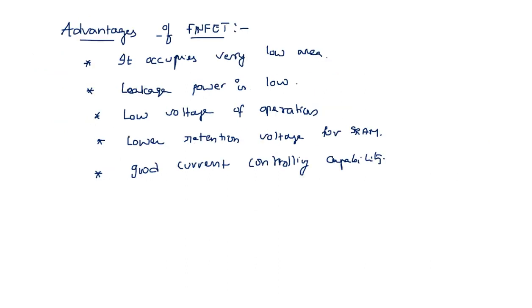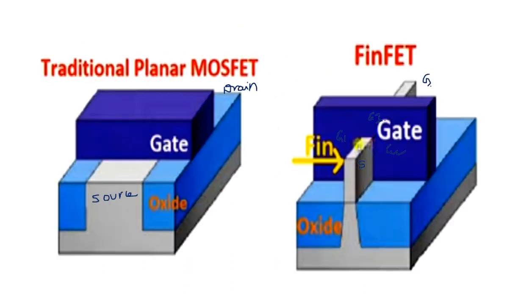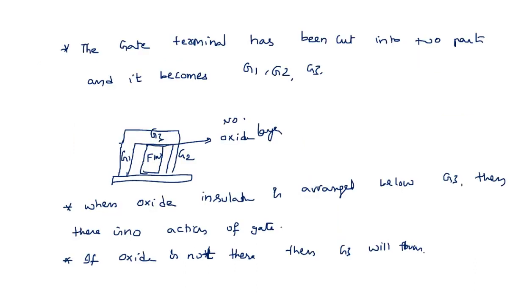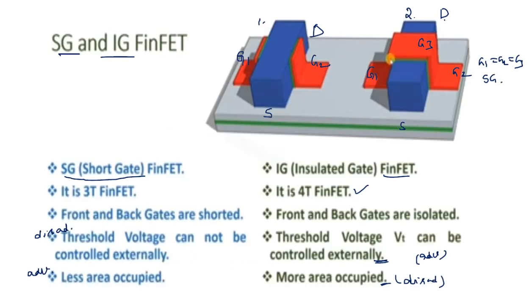It can have two or more fins in the same structure, which I will explain in the top view. The advantages of FinFET: it has a smaller area, leakage power is low, low voltage operation, lower retention voltage for SRAM, and good current controlling capability. These are the structural differences between traditional planar MOSFET and FinFET. There are two types of FinFET: shorted gate and insulated gate. Shorted gate means gate 1 and gate 2 are shorted together; insulated gate means they are separated.